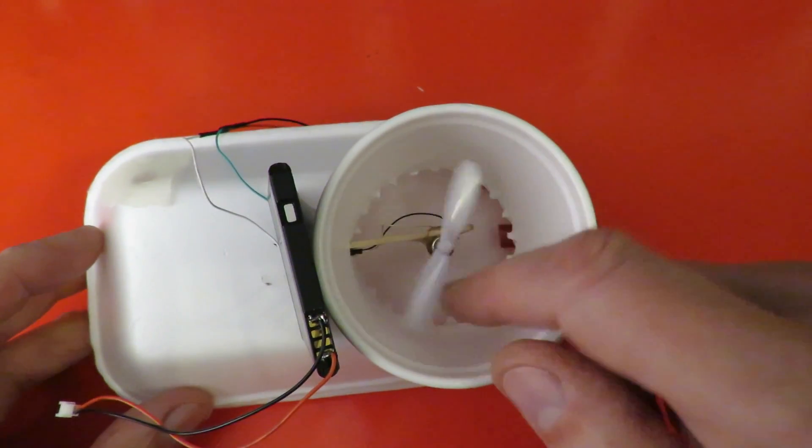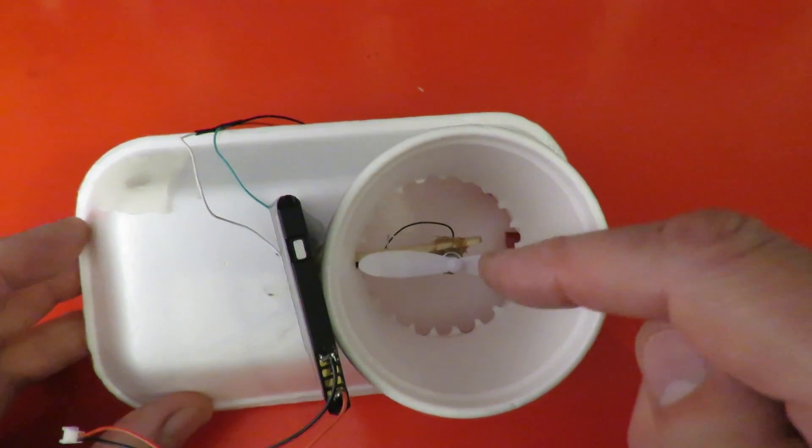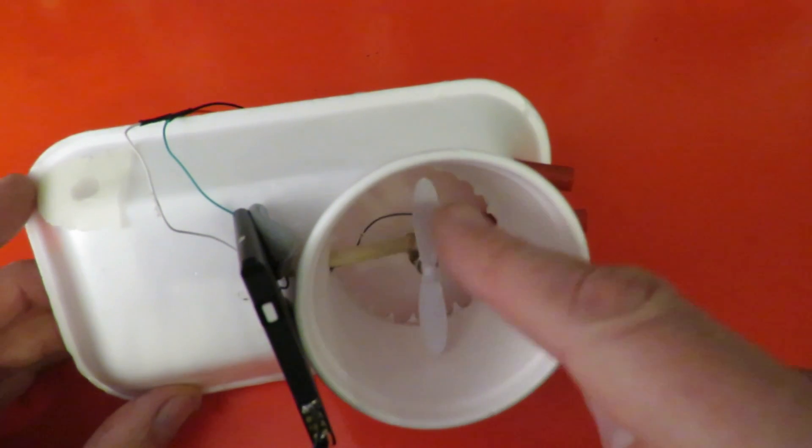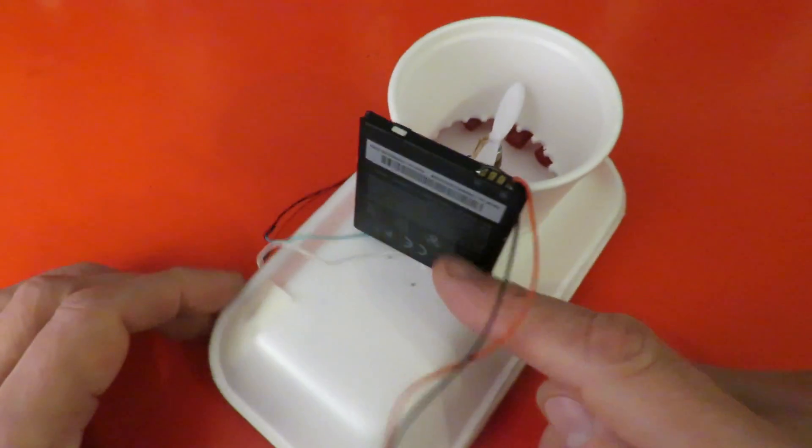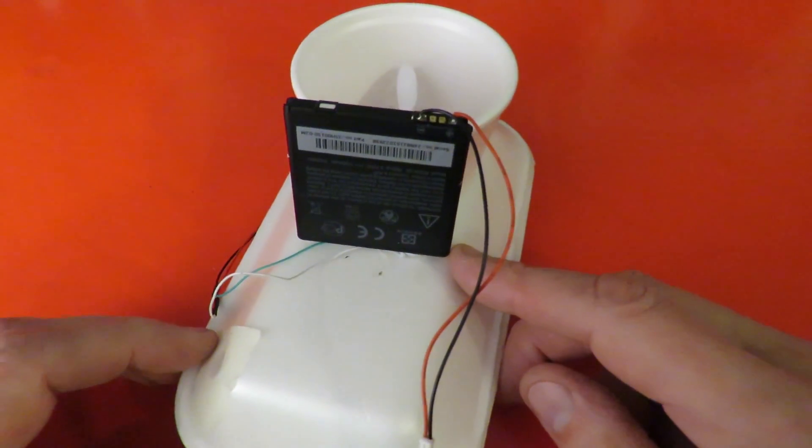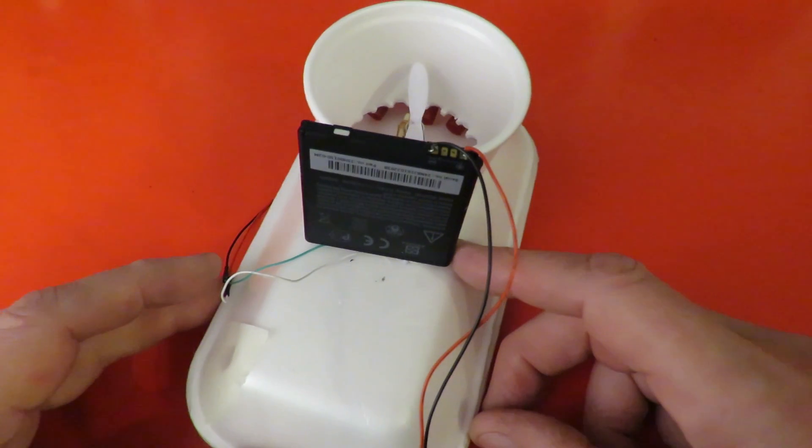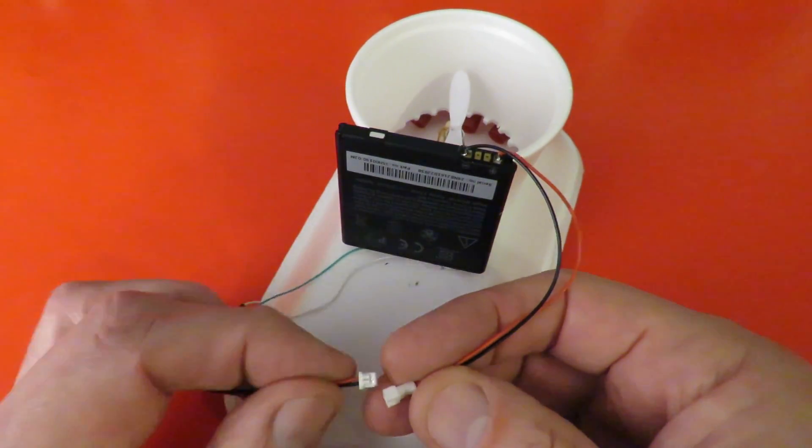That's one of my 3.7 volt coreless motors, just glued onto a popsicle stick to hold it in place in the middle. This is a 3.7 volt battery out of one of my mobile phones, so we can actually connect it up.